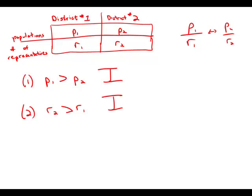Now because both statements are insufficient we look at the combined statements. What happens when we combine statement number one with statement number two? Well now things get kind of interesting because if I look at P1 over R1, I know that P1 is bigger than P2, so if I change the numerator from P1 to P2 I get a smaller fraction.